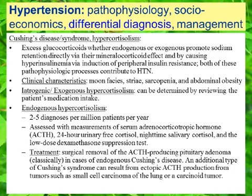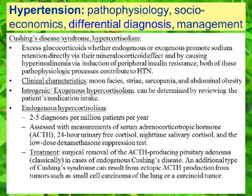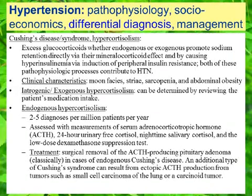For iatrogenic or exogenous hypercortisolism, we can usually determine this by reviewing the patient's medication intake — classically a patient taking steroids for some type of inflammatory disease. For endogenous hypercortisolism, we note about two to five diagnoses per million patients per year, so it's relatively rare. We assess this with measurements of serum ACTH, 24-hour urine-free cortisol levels — which has long been a gold standard — nighttime salivary cortisol, and classically the low-dose dexamethasone suppression test.